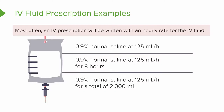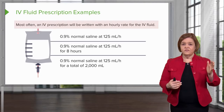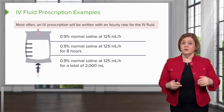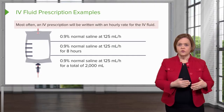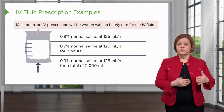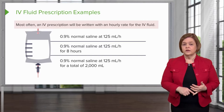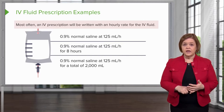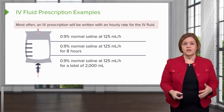Now look at the third order. This one says 0.9% normal saline at 125 milliliters per hour for a total of 2000 milliliters, or two liters. So these are just three different formats of how you might see an IV order. The first one: hang the IV and it continues at 125 milliliters an hour — keep a close eye on the patient for fluid volume overload and keep communicating with the healthcare provider. Orders two and three tell me exactly how long the IV continues: the second for eight hours, and the third until two liters or 2000 milliliters have been infused into the patient.